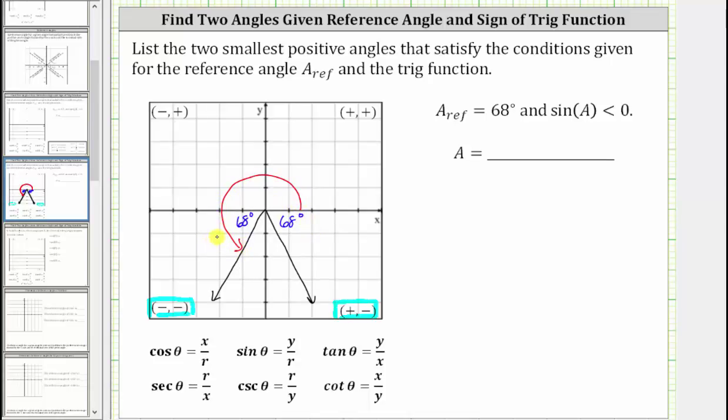To determine the measure of this angle, because the terminal side is in quadrant three, we take 180 degrees and then add the reference angle. 180 degrees plus 68 degrees is equal to 248 degrees.